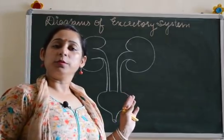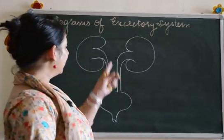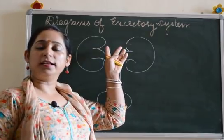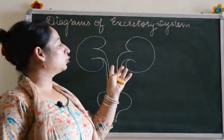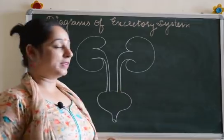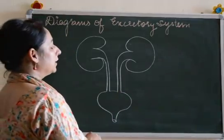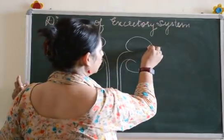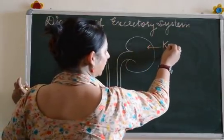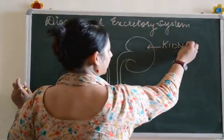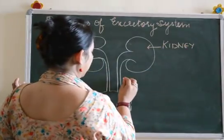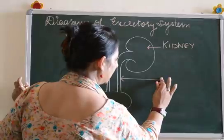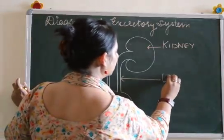Now this is the human excretory system. In many diagrams we also show vasa recta, renal artery, and renal vein, but I am not going to draw them here because this is just the diagram of the excretory system. Now we come to the labeling part. Draw arrows towards the part which you are going to label, and the lines should be in a straight line. The first label is kidney, and then obviously the lines should be straight. Up to here that's the ureter.